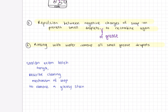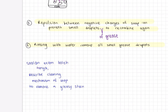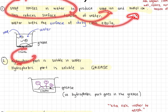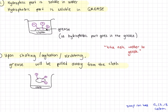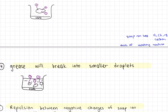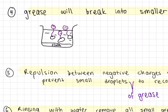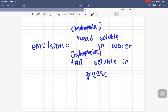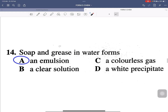In an exam, they can ask you to describe the cleaning mechanism of soap to remove a greasy stain. Explain step by step: start with soap ionizing in water to produce soap ion and metal ion, then explain how the hydrophobic and hydrophilic parts attach, how shaking pulls the grease away from the cloth, how the grease breaks into smaller droplets, how repulsion between negative charges prevents recombination, and finally rinsing with water. Extra tip: emulsification is when the hydrophilic part is soluble in water and the hydrophobic part is soluble in grease. So in an exam, if they ask 'soap and grease in water forms,' you answer: an emulsion.